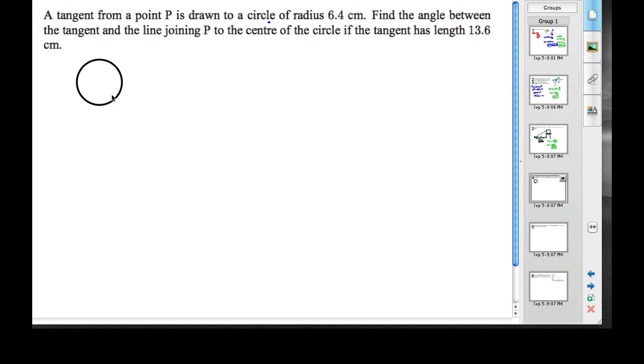We want a tangent from a point P, some other point, is drawn to this circle. So let's pick our point P. And then let's draw our tangent from P to the circle.